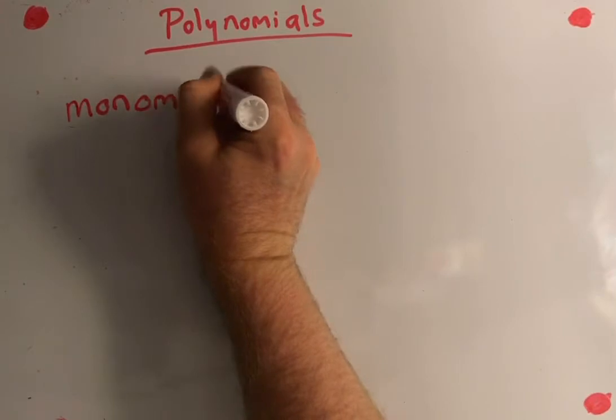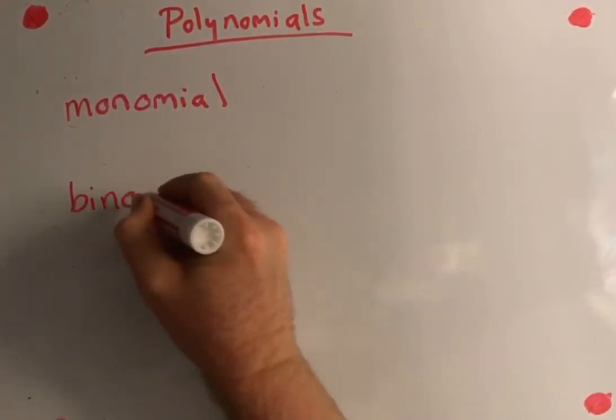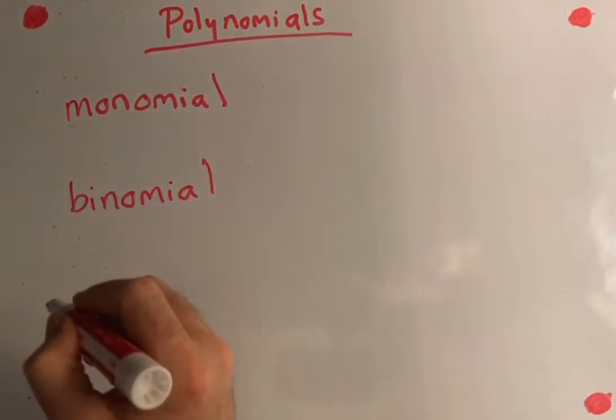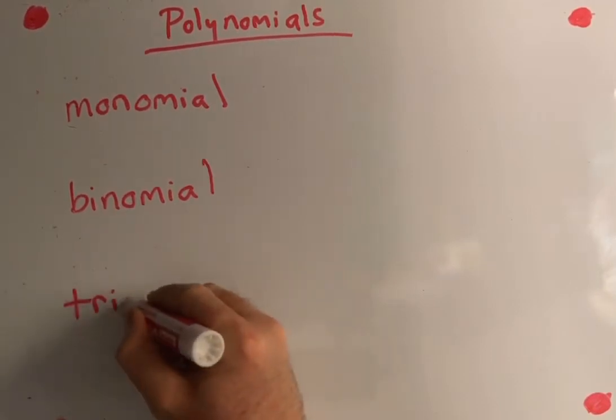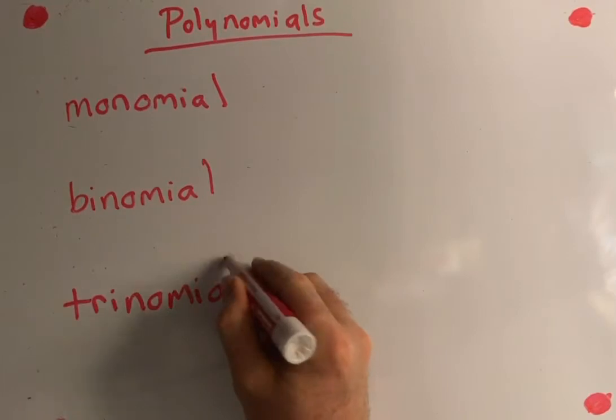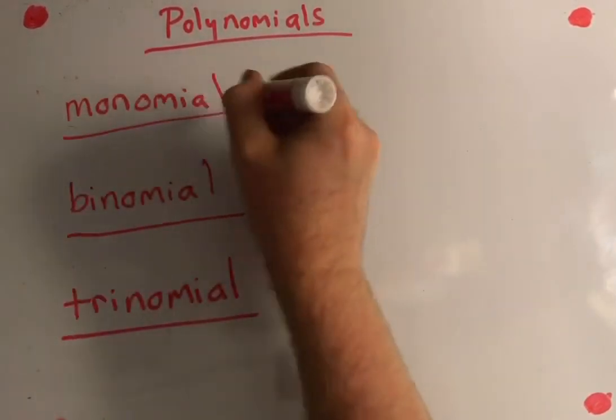So the three that we're going to talk about today are the monomial, the binomial, and the trinomial.